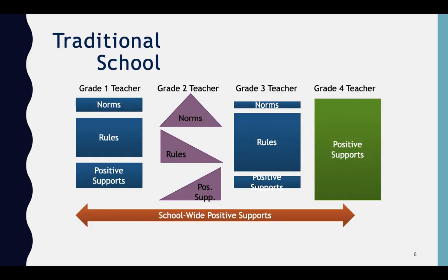In a traditional school, at grade one the teacher is going to set their own set of norms, rules, and positive supports. In grade two that might look a little bit different. Grade three, a little bit different. Grade four — it could be lots of positive supports and not a lot of rules. Each teacher has their own vision of how their classroom behavior plan is going to appear, and there's a running continuum of school-wide positive supports that could also look different in each classroom. And that's at a traditional school.